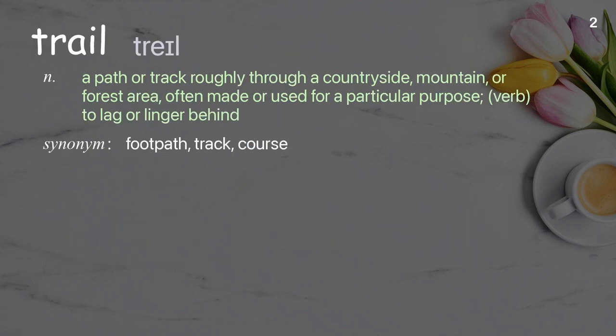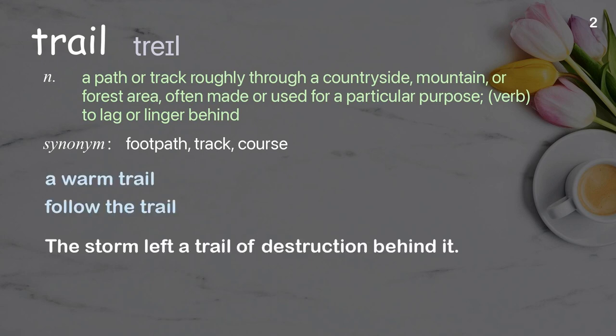Trail: a path or track roughly through a countryside, mountain, or forest area, often made or used for a particular purpose. Verb: to lag or linger behind. Examples: a warm trail, follow the trail. The storm left a trail of destruction behind it.